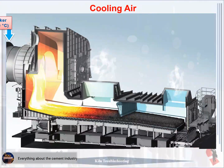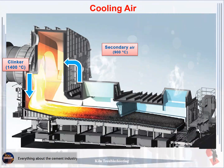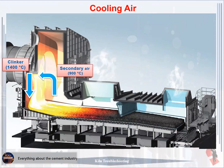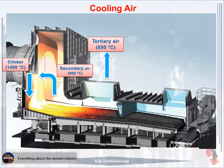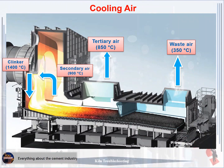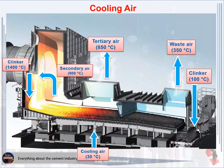The clinker inlet cooler temperature is 1400°C. Secondary air enters the kiln by suction ID fan at a temperature of 900°C. Tertiary air goes to the preheater by suction ID fan at a temperature of 850°C. Waste air goes to the EP filter by suction excess air fan at a temperature of 350°C. The clinker outlet cooler temperature is 100°C. Fresh air enters the cooling inlet for the clinker cooling process at a temperature of 30°C.